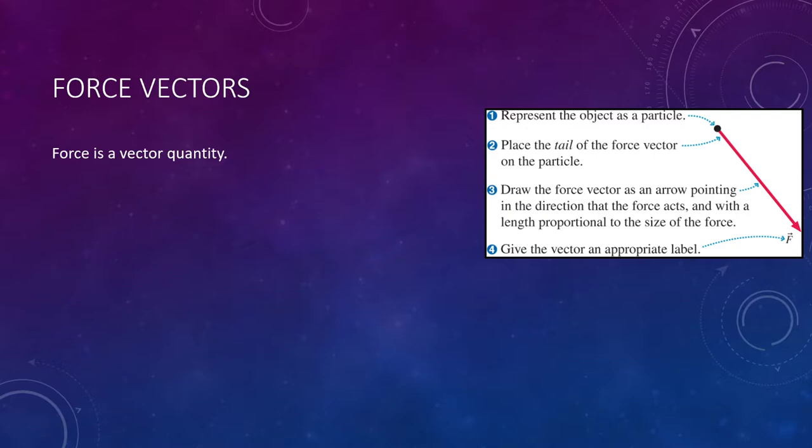Again, force is a vector. Recall that we represent vectors graphically by an arrow. We use a dot to represent the picture, or the particle, or the object, whatever you have. You draw your arrow away from your object in the direction of the force. And the size of your arrow is proportional to how strong of a force that is applied. And of course, don't forget to label it. This will become especially relevant starting in our next lecture, but it is so important to label your vectors, and you'll see why very soon.